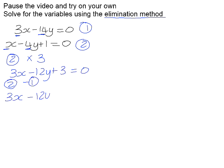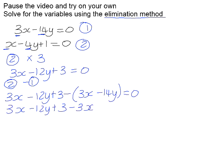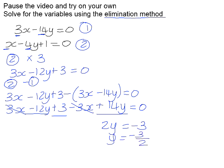So we'll have 3x minus 12y plus 3 minus 3x minus 14y. If we simplify, that gives us negative 3x plus 14y is equal to 0. The 3x minus the 3x is 0. Negative 12 add 14 is 2y. And if we minus 3 from both sides, we get 2y to be negative 3. Divide both sides by 2, and you get y to be negative 3 over 2.